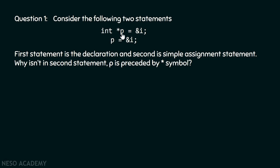In the first statement, we are declaring this pointer and also assigning the address of variable i to this pointer. In the second statement, it is just a simple assignment statement — we are not declaring the pointer here. Why isn't p preceded by the star symbol in the second statement?